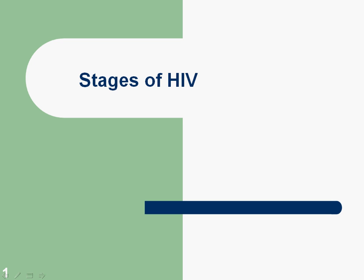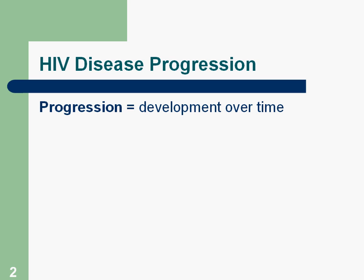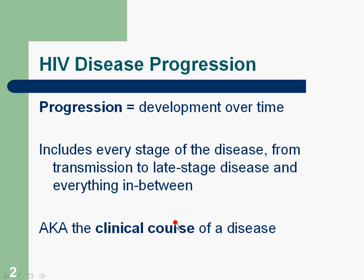Hello class, this is Val again. I would like to talk with you today about the stages of HIV, also known as HIV disease progression. This video is part one of two, and we will go from the immediate transmission of HIV up to HIV testing and the window period. HIV disease progression — 'progression' as a word means the development over time — and it includes every stage of the disease from transmission on day one to late stage disease. This is also known as the clinical course of a disease.